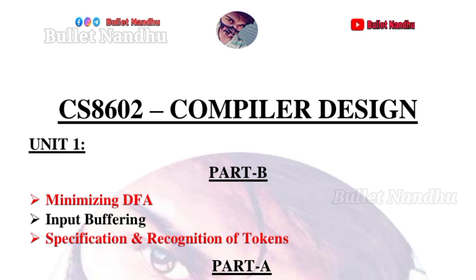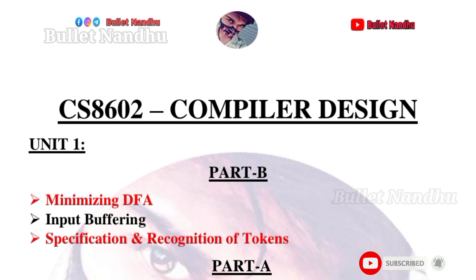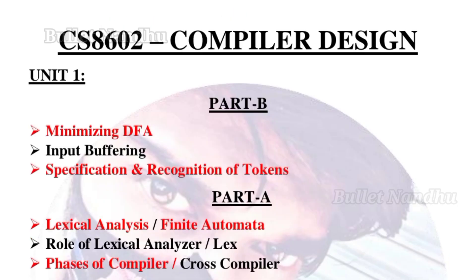First of all, we will talk about CS8602 Compiler Design, covering Part A and Part B topics. Unit 1 Part B includes minimising DFA, specifications and recognition of tokens. Unit 1 Part A includes lexical analysis, finite automata, and passes of compiler.